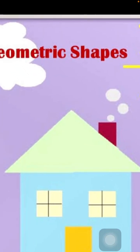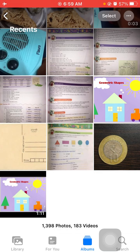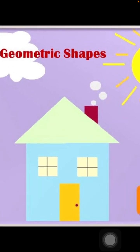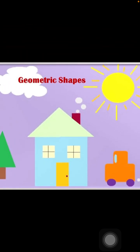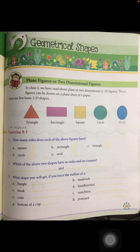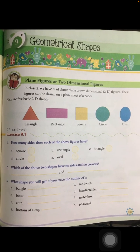You are going to tell the shape of the knob, and also the bubbles which are coming out of this chimney — you are going to tell the shape of those too. So let's start our Chapter 9: Geometrical Shapes.